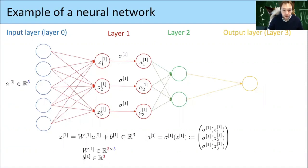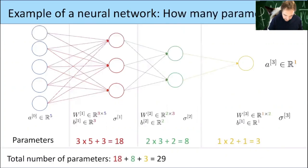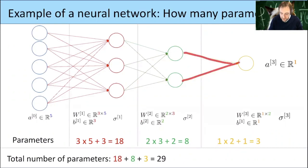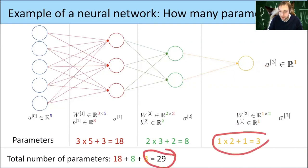So is it clear what Z, A, W, B, and sigma are? In this example we can count the parameters: in the first layer, 15 numbers in the matrix plus 3 biases = 18; in the second layer, 6 in the matrix plus 2 biases = 8; and in the last layer, 2 weights plus 1 bias = 3. So in total, to train this neural network we want to find 29 numbers.